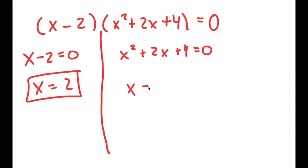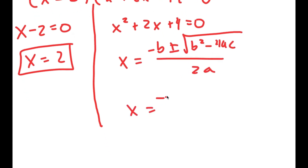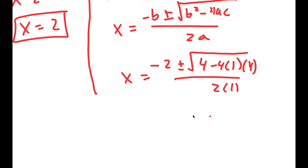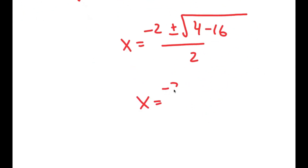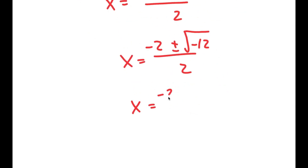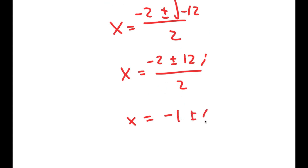So to solve this, I'm going to use the quadratic formula. I get negative 2 plus or minus the square root of 4 minus 4 times a, which is 1, times c, which is 4, all over 2a, so 2 times 1. This turns into negative 2 plus or minus the square root of 4 - 16 over 2, which equals negative 2 plus or minus √(-12) over 2, which is negative 2 plus or minus 2√3·i over 2, which equals -1 ± √3·i.